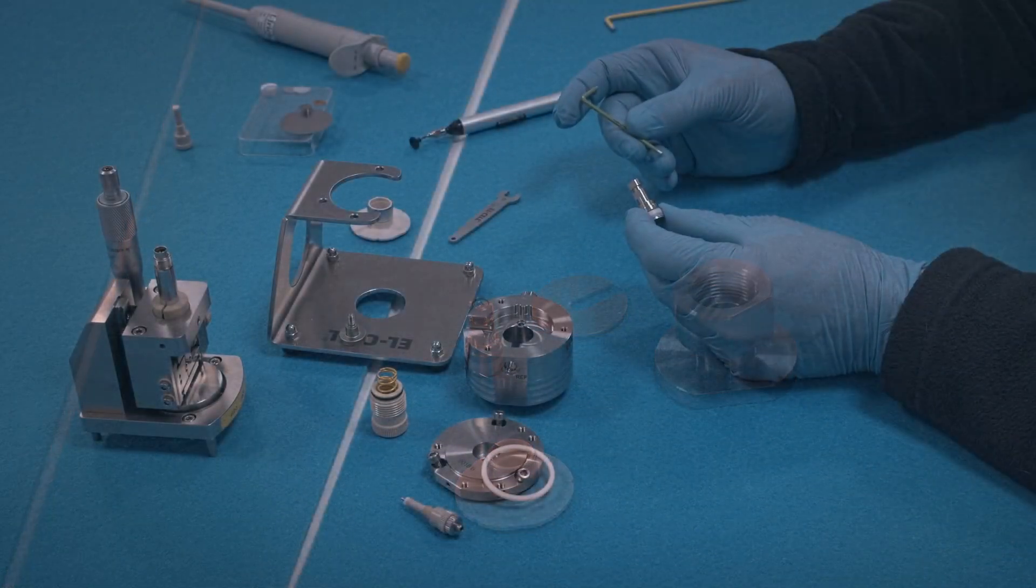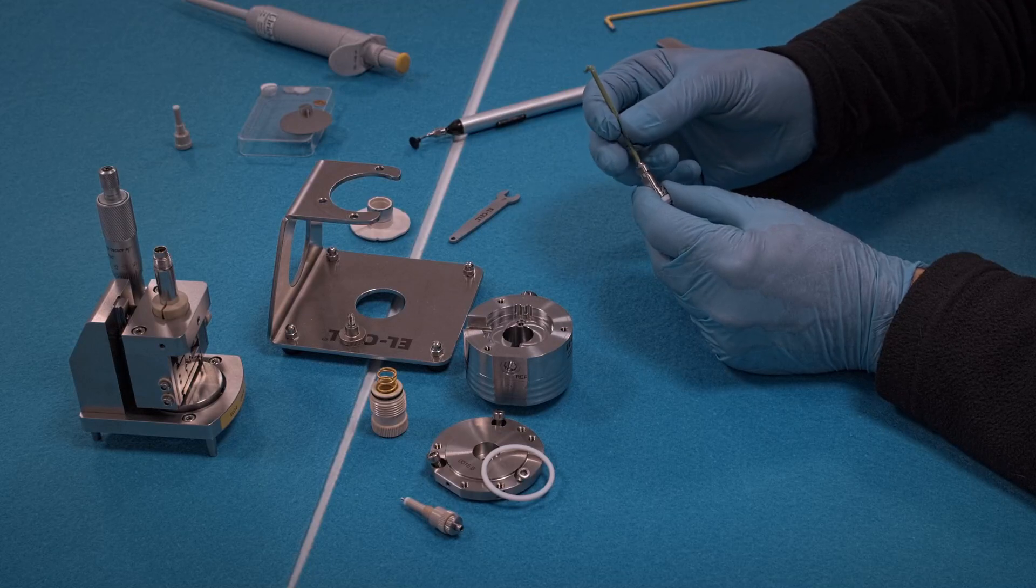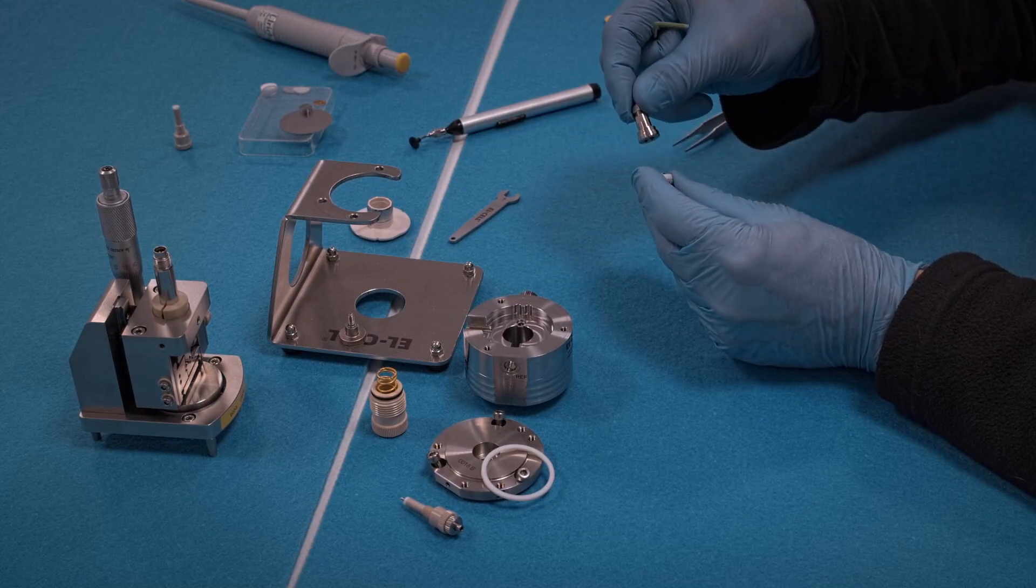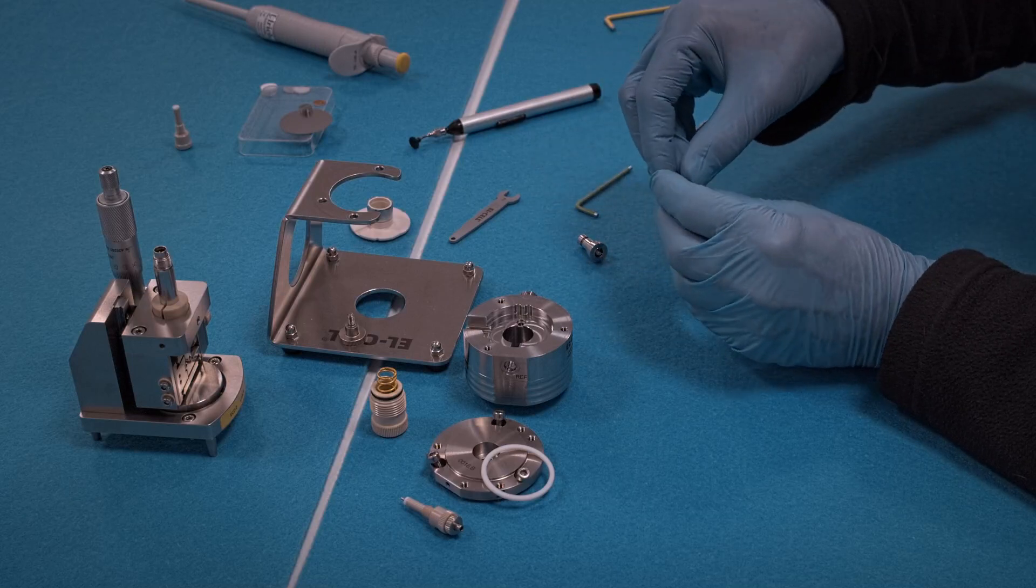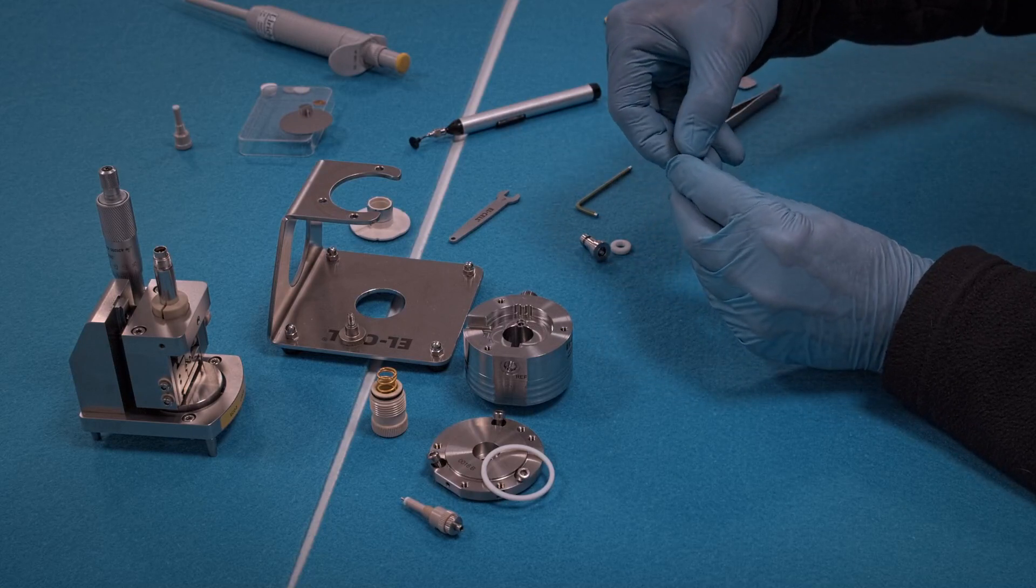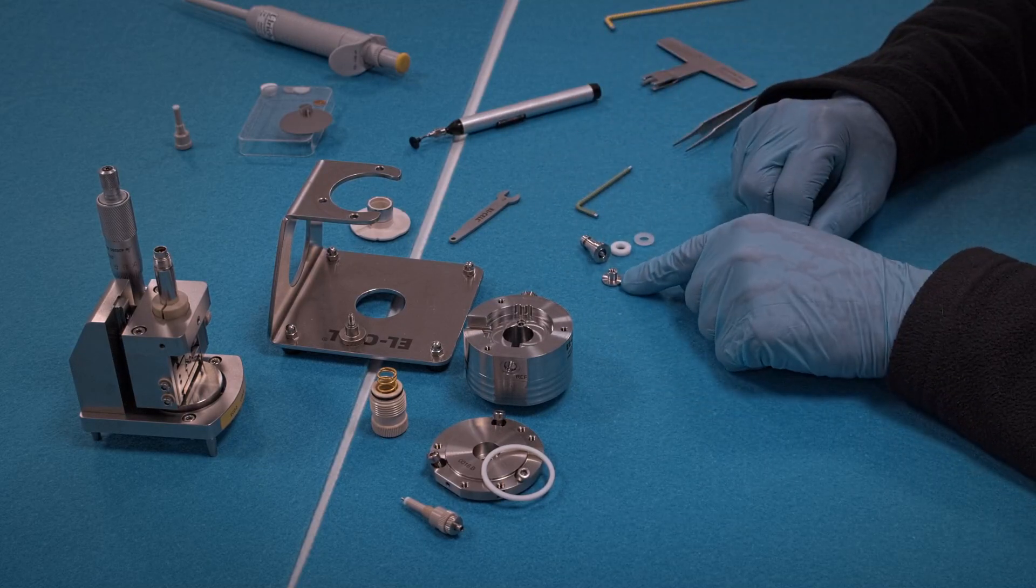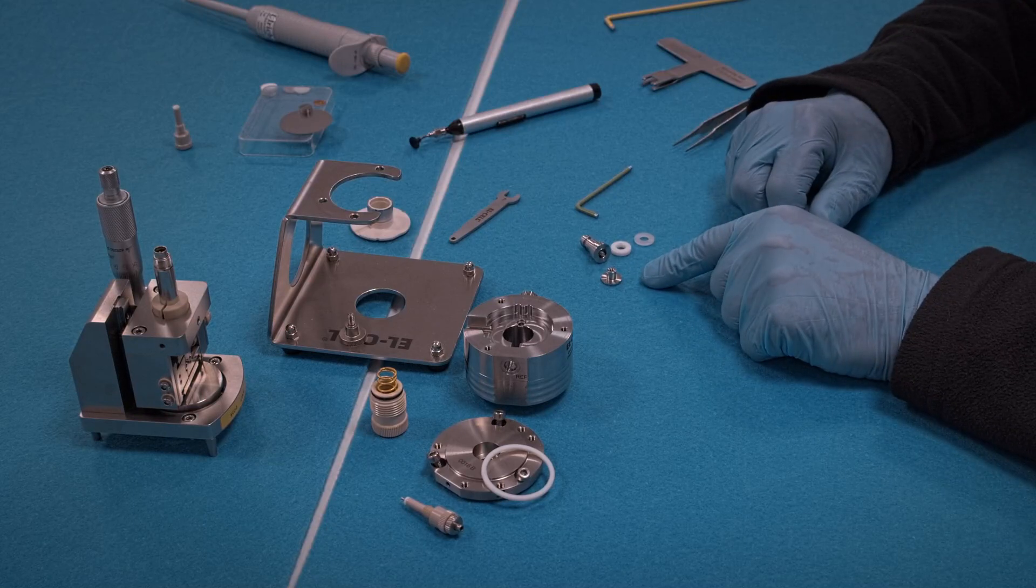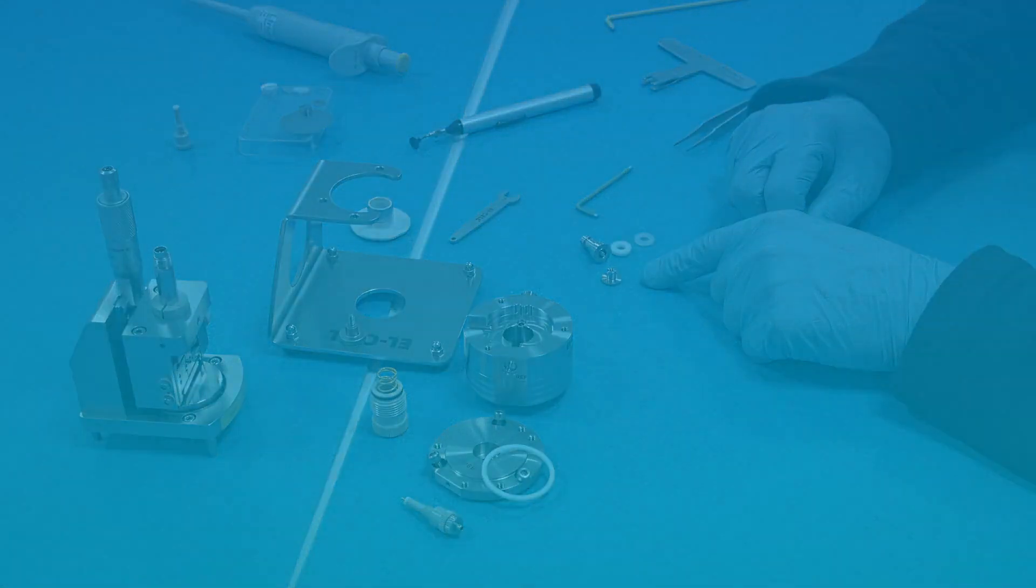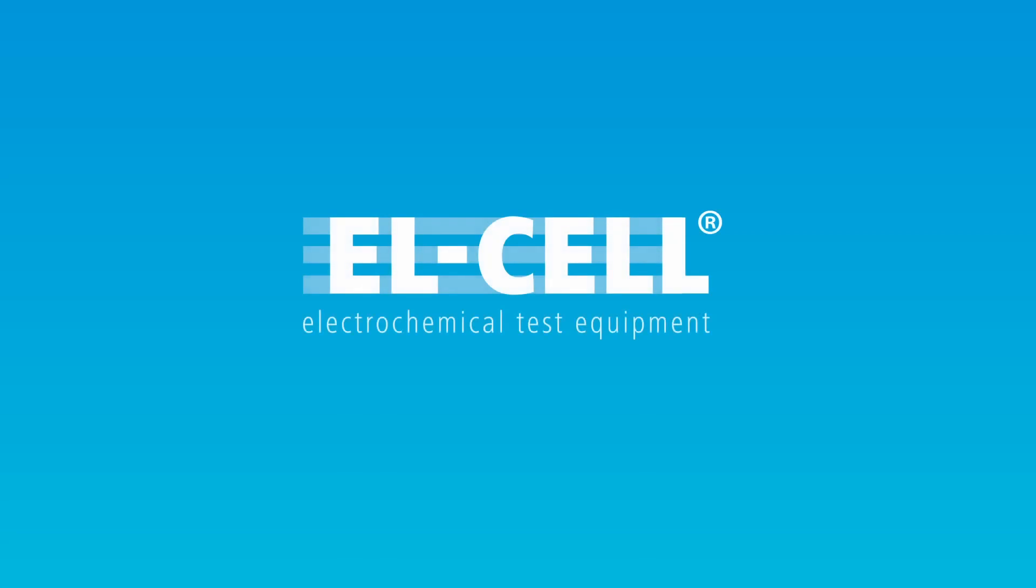And only now further disassemble the piston. The two seals are disposed. You have to use new seals for each experiment. The two metal parts are cleaned, dried, and reused. Okay, and done. All right. Thank you.